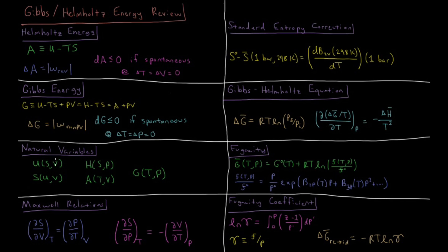These expressions in terms of the natural variables of the thermodynamic state functions give rise to the Maxwell relations, which come about due to the fact that mixed second partial derivatives are equal to each other.